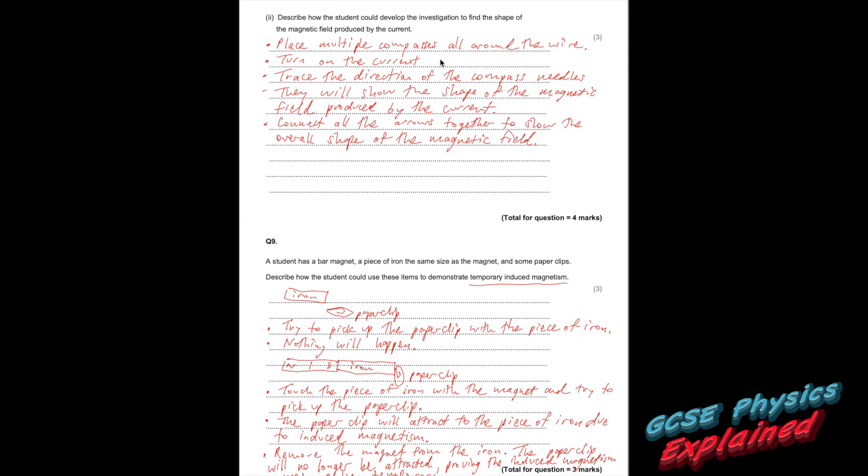And this is how you write it down. Place multiple compasses all around the wire. Turn on the current. Trace the direction of the compass needles. They will show the shape of the magnetic field produced by the current. Connect all the arrows together to show the overall shape of the magnetic field.